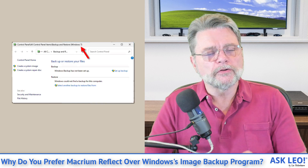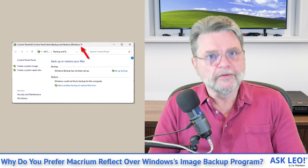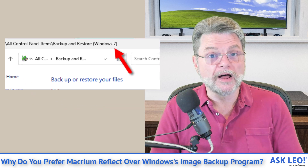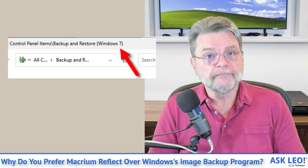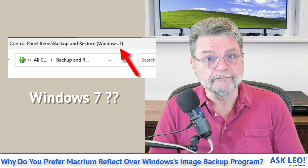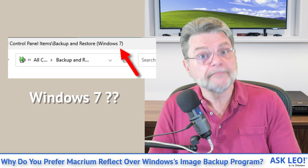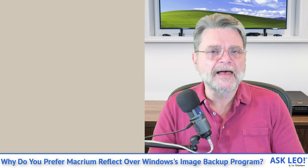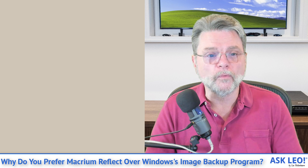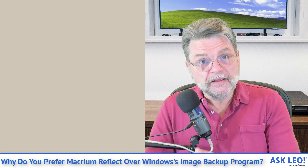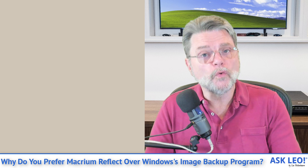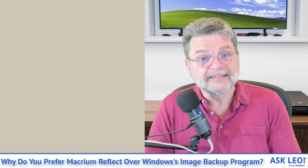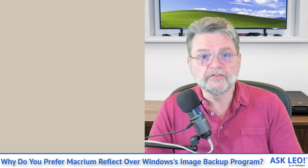Since Windows 10, if you look carefully for the backup and restore utility in Windows, you'll see it actually has a parenthetical comment — it says "Backup and Restore (Windows 7)." Even though we're in Windows 10 and Windows 11, this utility is referred to specifically as the Windows 7 backup tool, because Microsoft is no longer updating it.